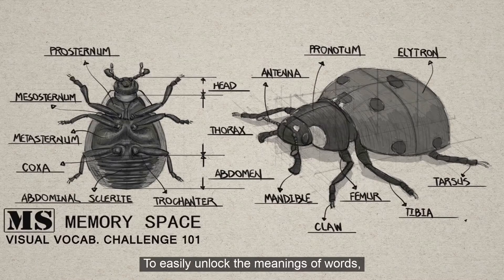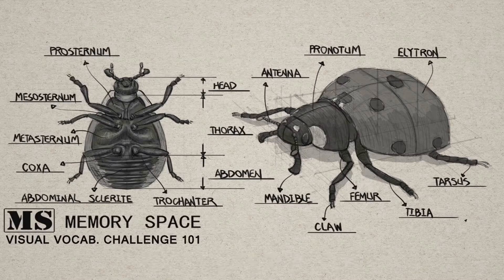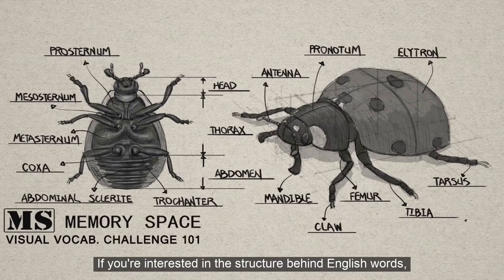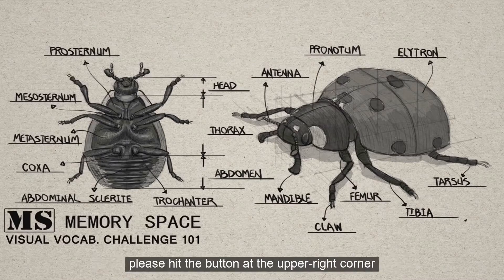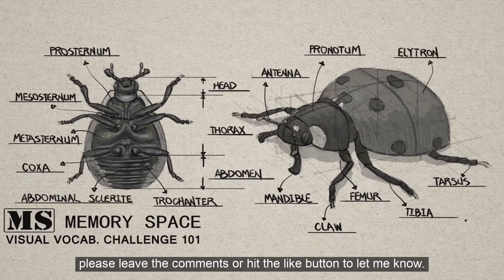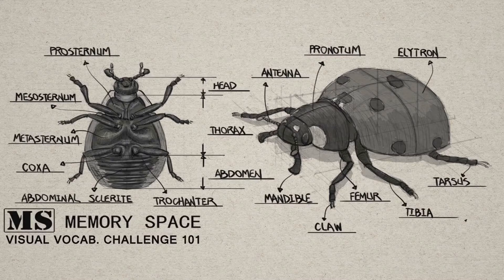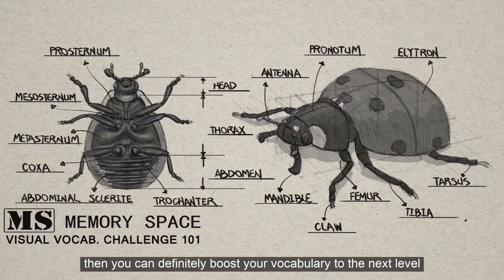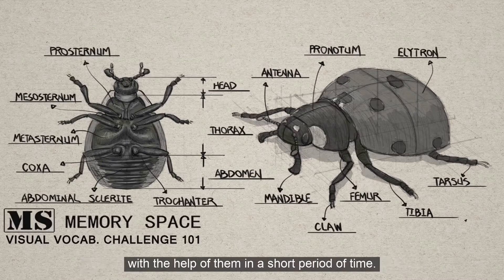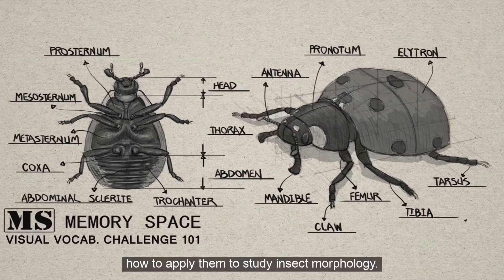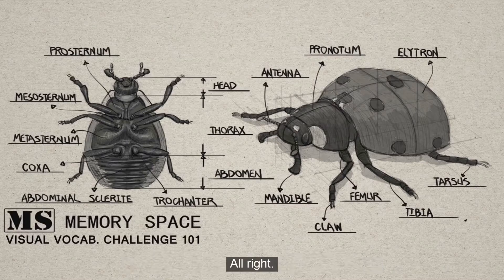To easily unlock the meaning of words, I apply more things inspired by Norman Lewis, the book 'Word Power Made Easy.' Some videos about introduction of these tools are in the core fundamental series. If you're interested in the structure behind English words, please hit the button at the right corner. If you want more fundamental videos, please leave a comment or hit the like button to let me know. In this video, I'm going to demonstrate how to apply them to study entomology. Let's get to this.